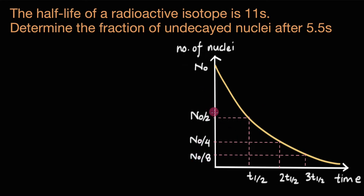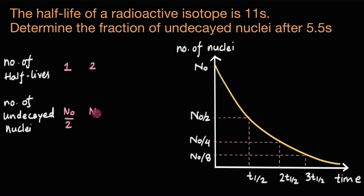So we can see there is a pattern between the number of half-lives and the number of undecayed nuclei. After one half-life, the number of undecayed nuclei are N0 divided by 2. After two half-lives, it is N0 by 4. After three half-lives, it is N0 by 8.